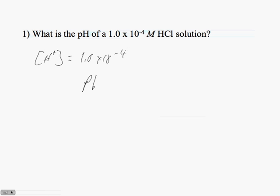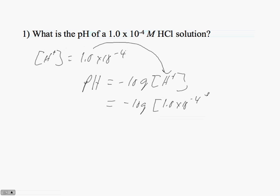We know by definition that pH is equal to minus the log of the hydrogen ion concentration. We simply take the hydrogen ion concentration, this number, substitute it back into the equation. We have minus the log of 1.0 times 10 to the minus 4.